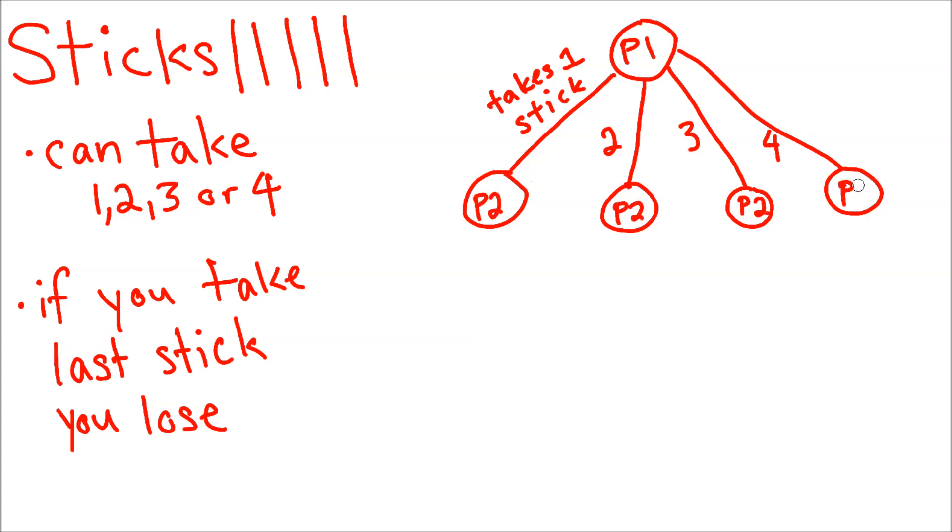If we go first, we could take one, two, three, or four sticks, so we make four branches for each of these possibilities. Then we make all the possible branches for each move our opponent could make, and so on.